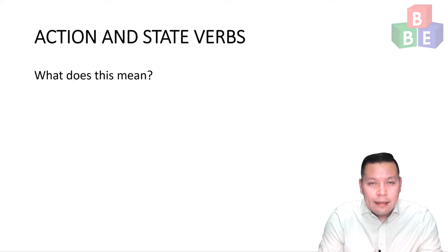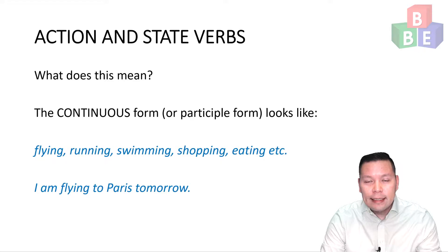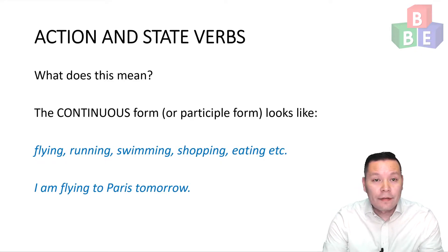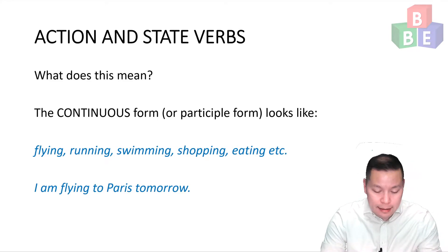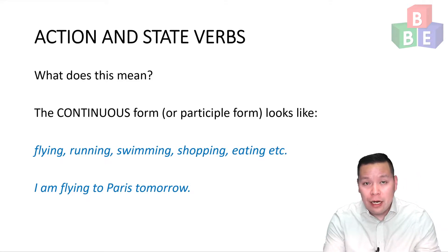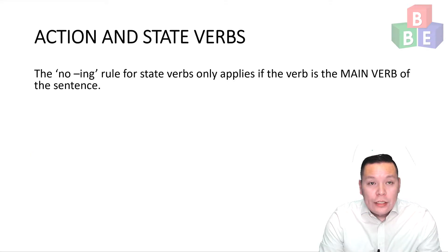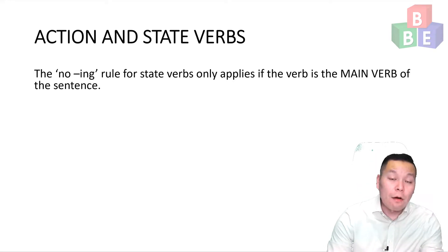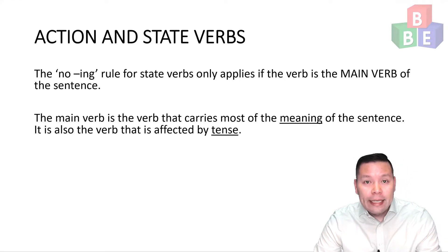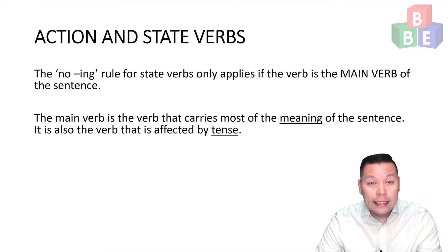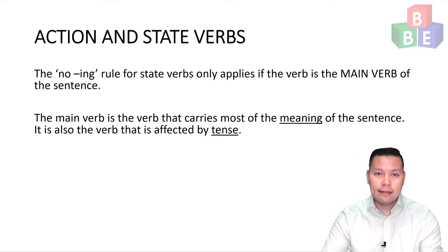What does this mean? The continuous form is the participle form or the -ing form of a verb. For example, flying, running, swimming. In an example sentence, it would be: I am flying to Paris tomorrow. The no -ing rule only applies if the verb is the main verb of the sentence — the verb that carries the main meaning and tense of the sentence.